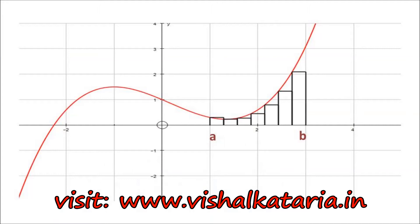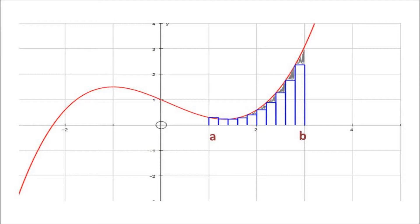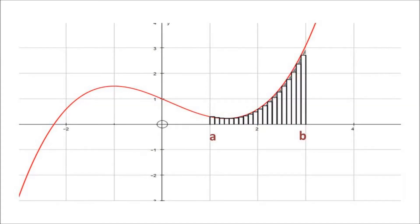If I increase the number of rectangles, the area will become closer to the area under the curve — that is the required area. If we further increase the number of rectangles, the gap between the sum of areas of rectangles and the area under the curve will further reduce. Further increasing the number of rectangles, the area of rectangles will go closer and closer to the area under the curve, that is the required area.